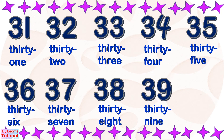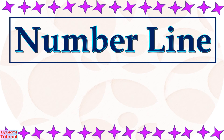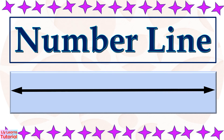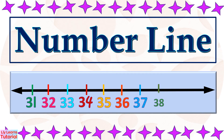39, 40. We can also write numbers 31 to 40 on the number line: 31, 32, 33, 34, 35, 36, 37, 38, 39, 40.